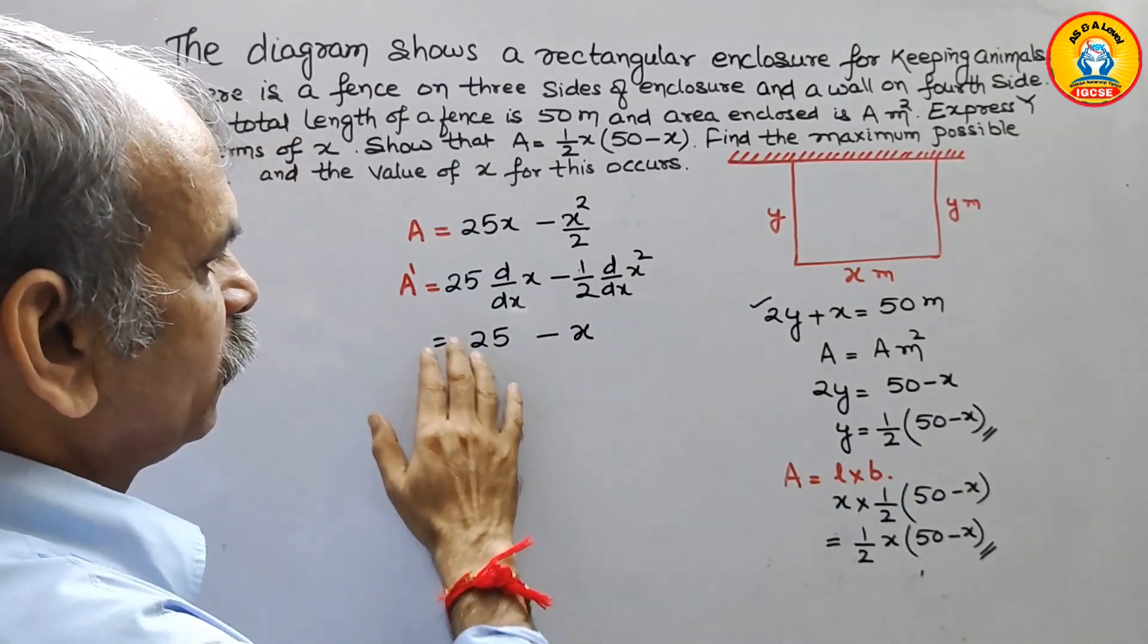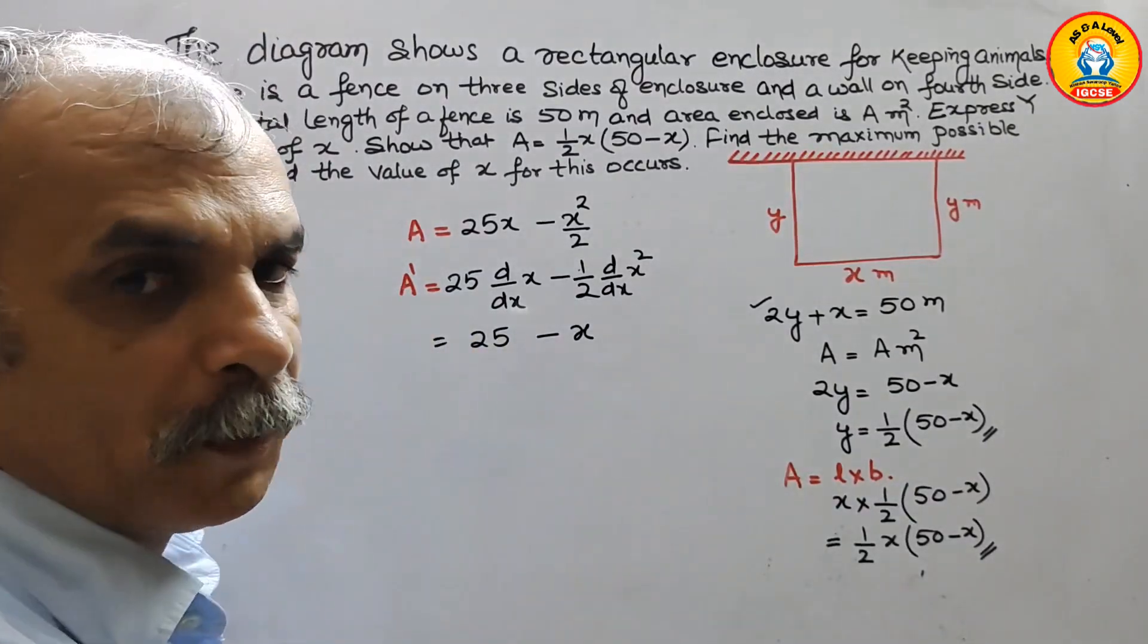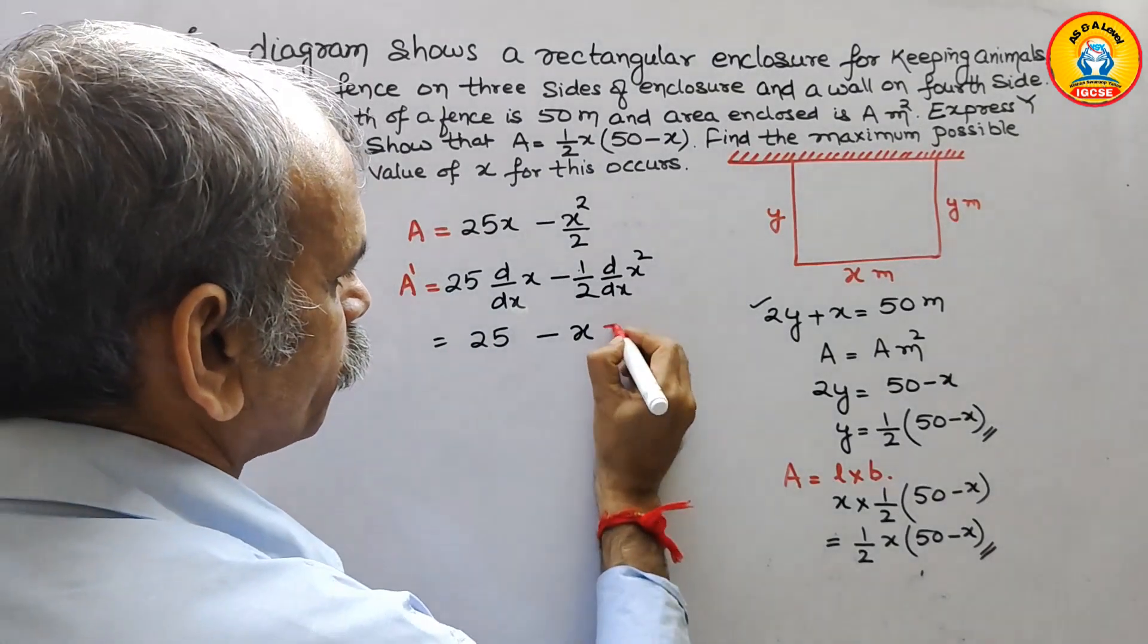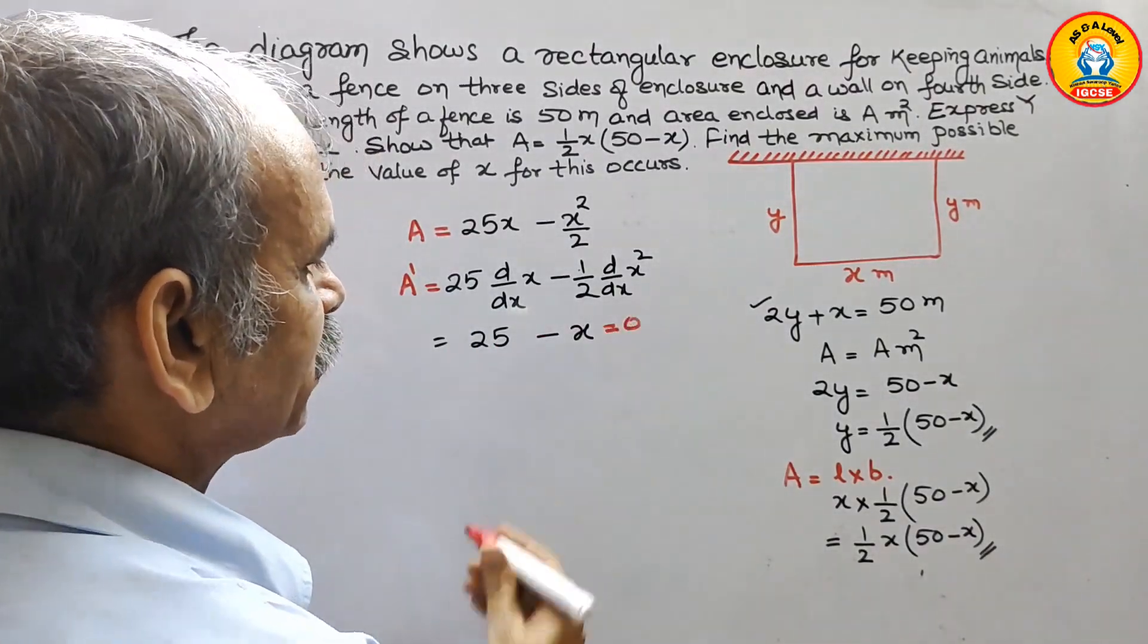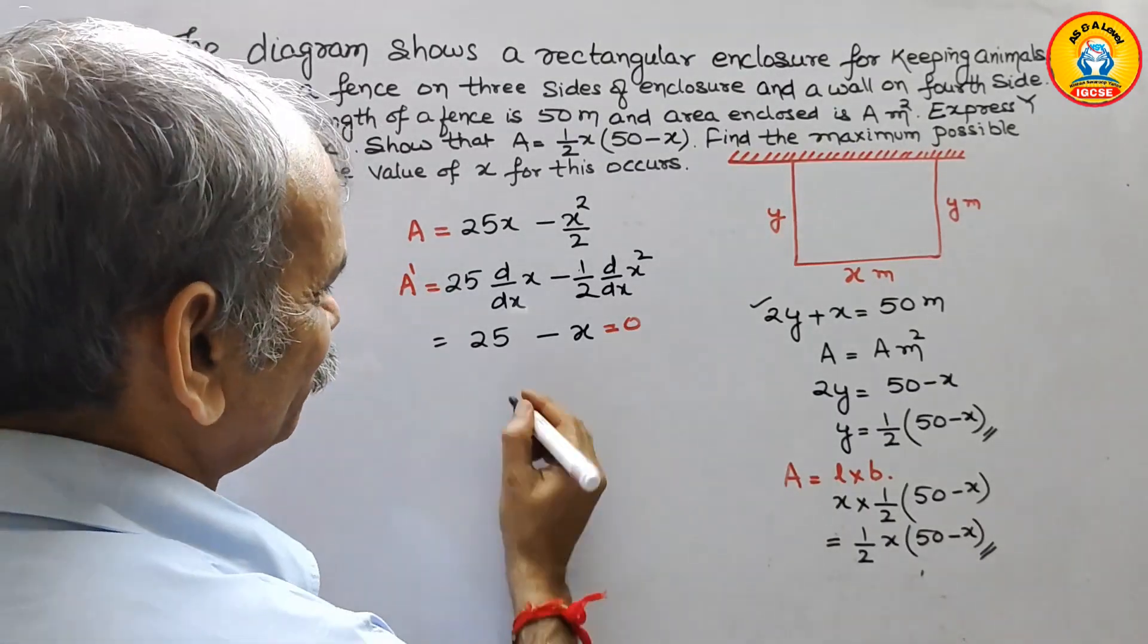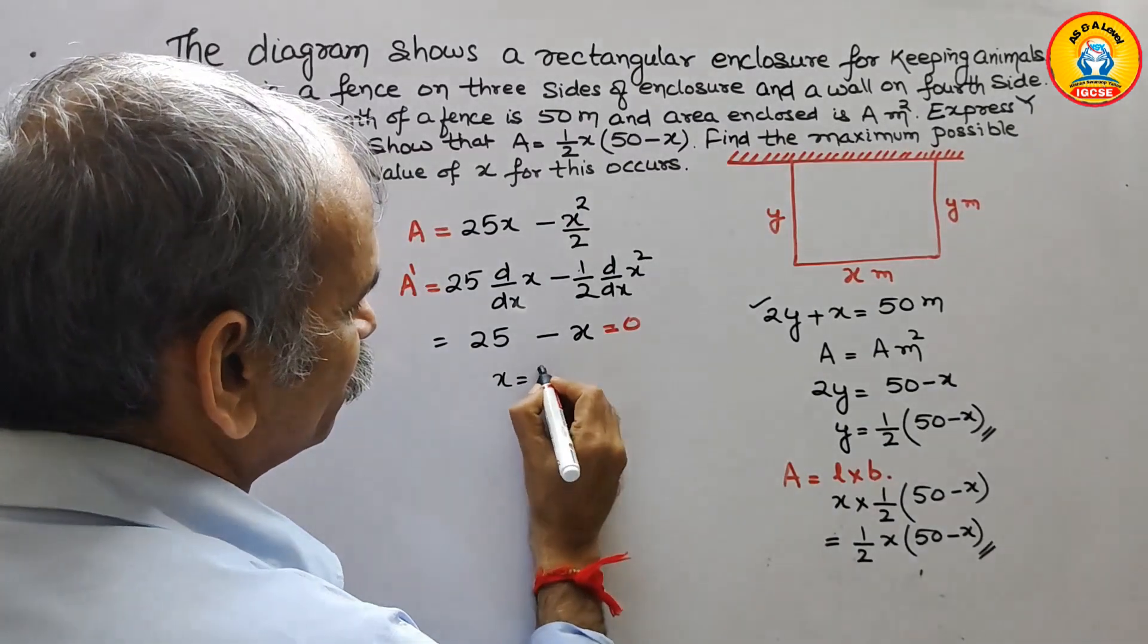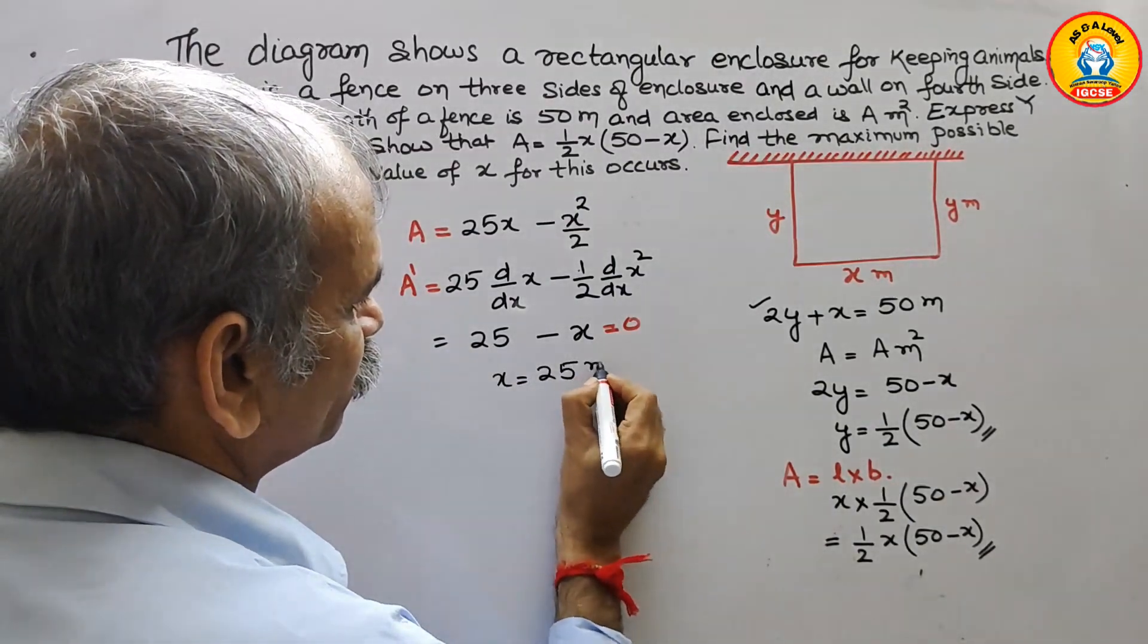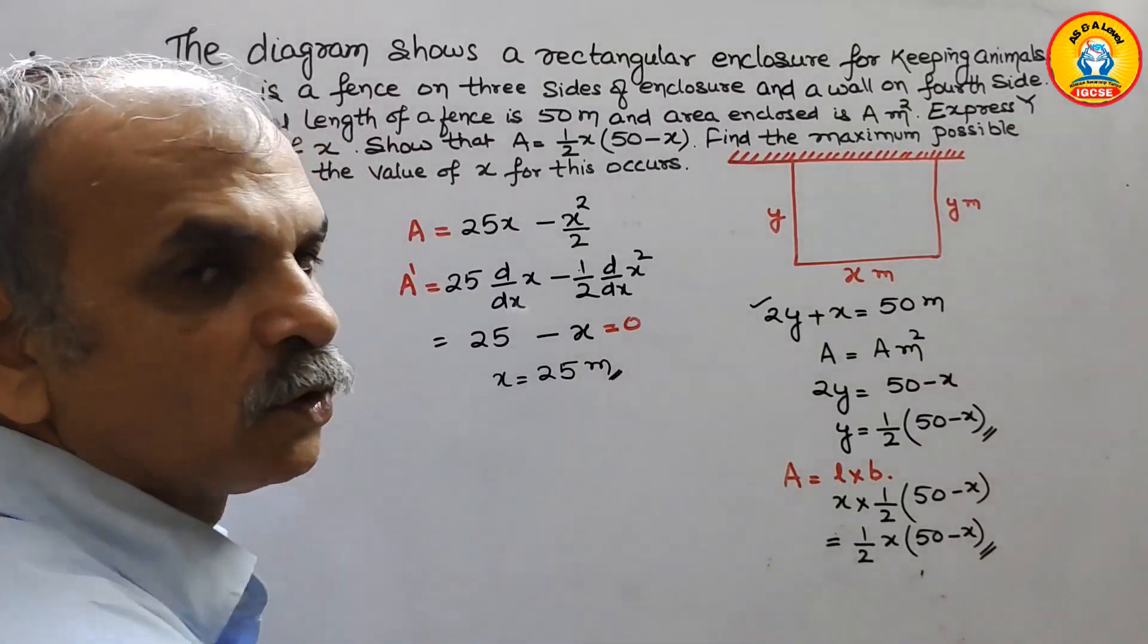So now, to get the value we have to make this as 0. So now we can say x is equal to 25 meters.